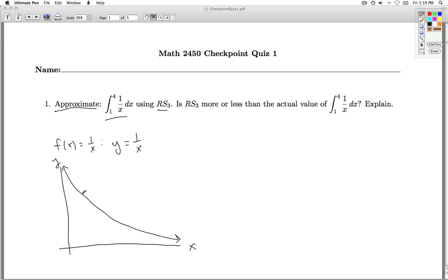And we're looking from the interval from 1 to 4. I'll call that x equals 1. I'll call that x equals 4. We're asked to find RS3. RS3 is the right endpoint sum with three subdivisions.